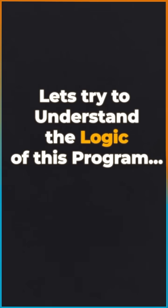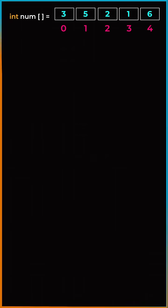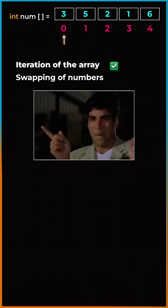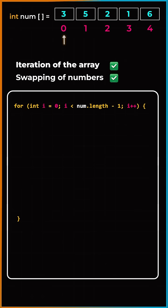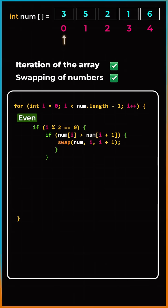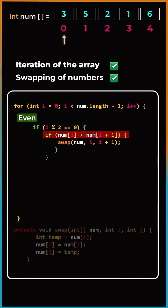So let's understand the logic of this program. To solve this particular problem, we need two things: iteration of the array and swapping of numbers. We will iterate over the array, and for every even index, if the current value is greater than the next one, just swap them.